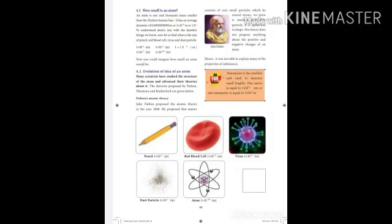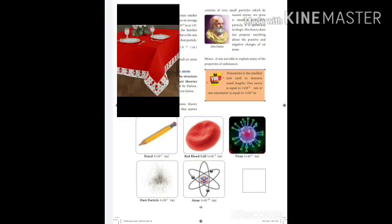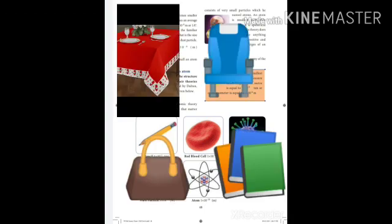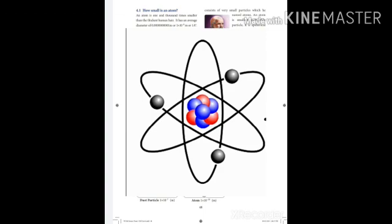Hi students, welcome to online class. Now we're going to see the next lesson in science, that is atomic structure. We already learned in the previous chapter about matter and molecules. The molecules are a combination of atoms of different elements or the same element — for example, table, chair, bag, book, chalk, and blackboard. In short, everything you see around is made up of atoms.